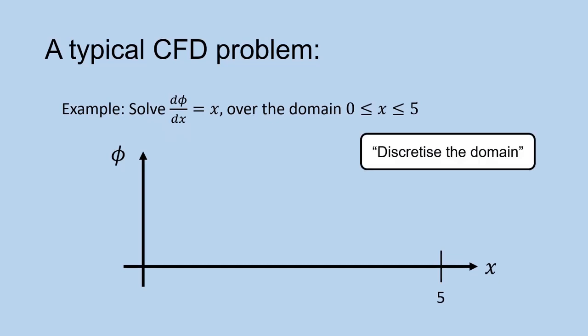The first step is to discretize the domain. This simply means we would chop up the domain into a certain number of pieces. In this example, we cut out the domain into 5 equally sized segments as shown. 1, 2, 3, 4, 5.